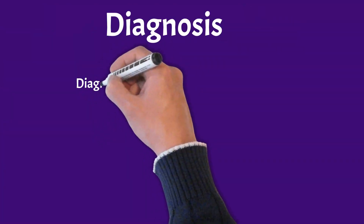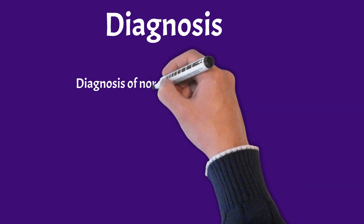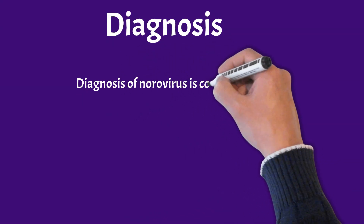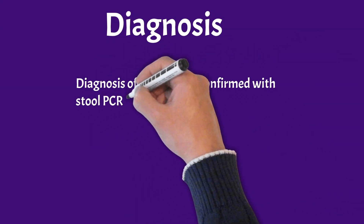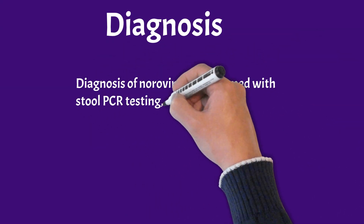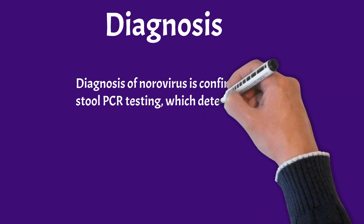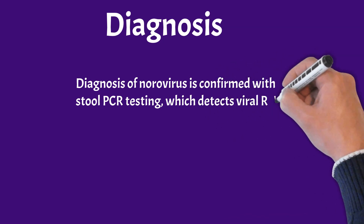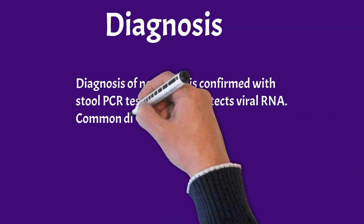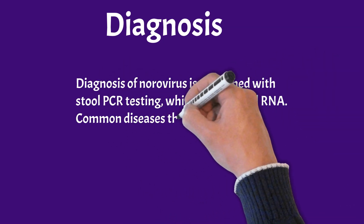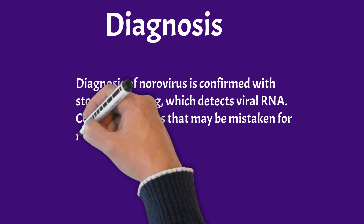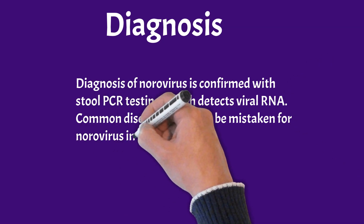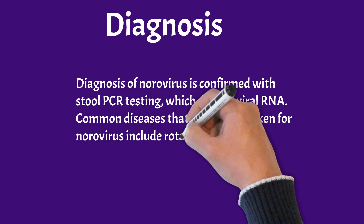Diagnosis of norovirus is confirmed with stool PCR testing, which detects viral RNA. Common diseases that may be mistaken for norovirus include rotavirus infection, bacterial infections, and food poisoning.